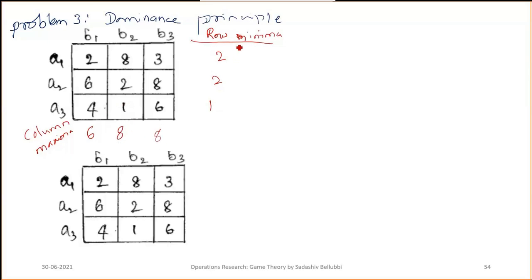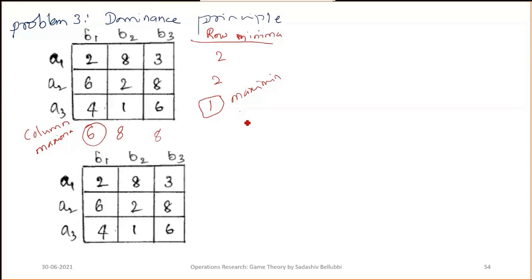The maximin value is 2 and the minimax value is 6. Since the maximin and minimax values are different — 1 and 6 — the value of the game lies between 1 and 6.